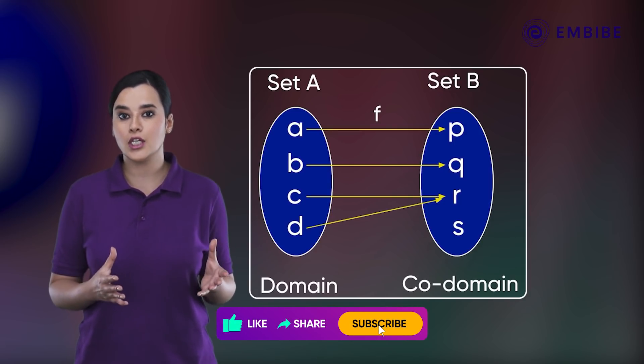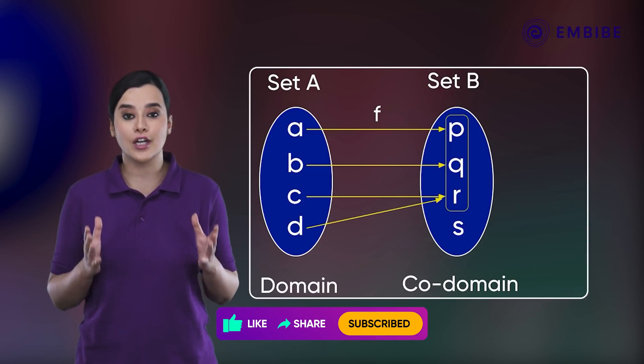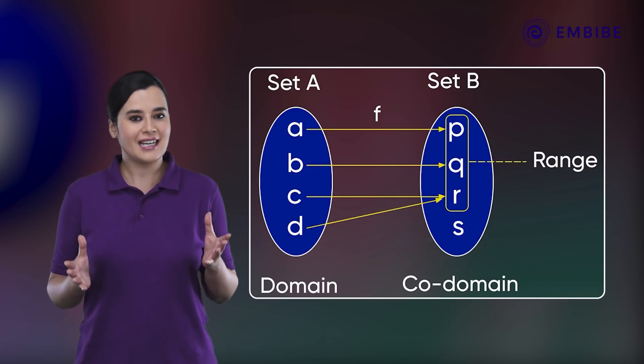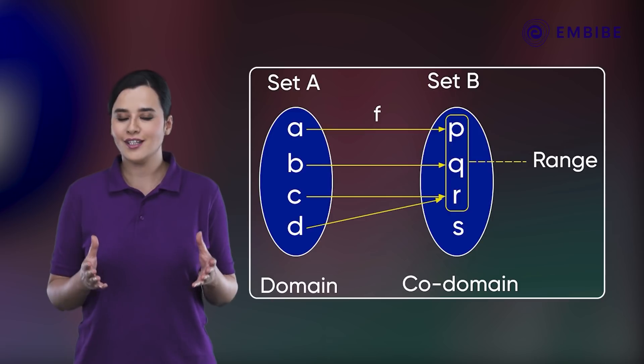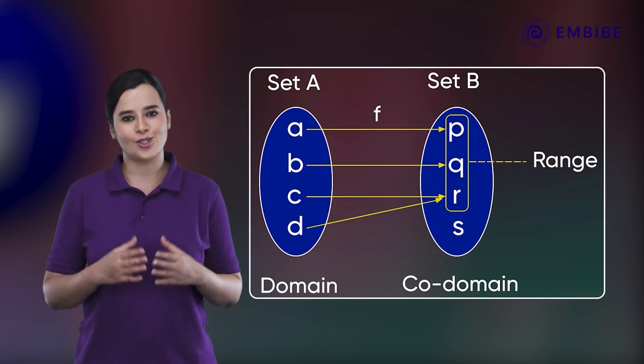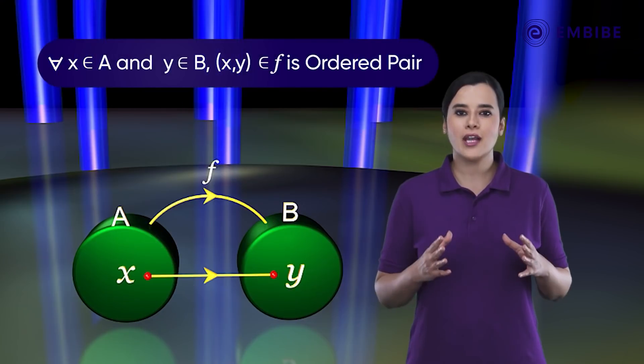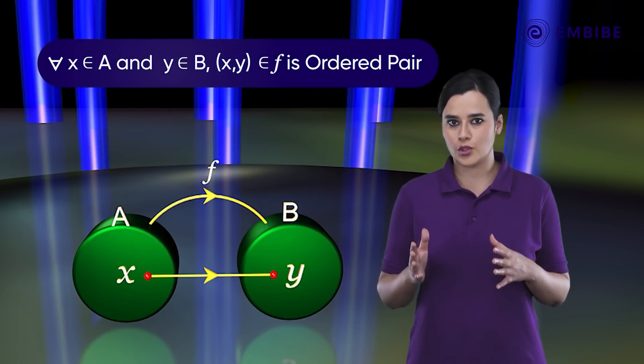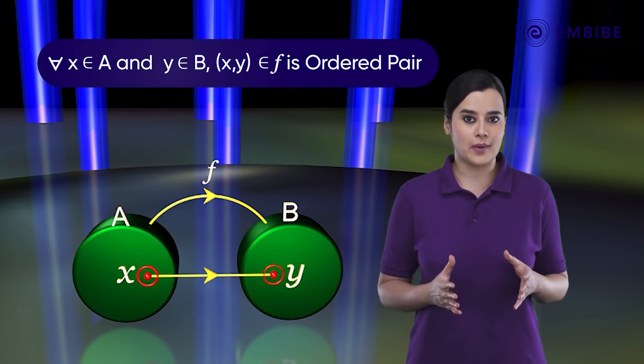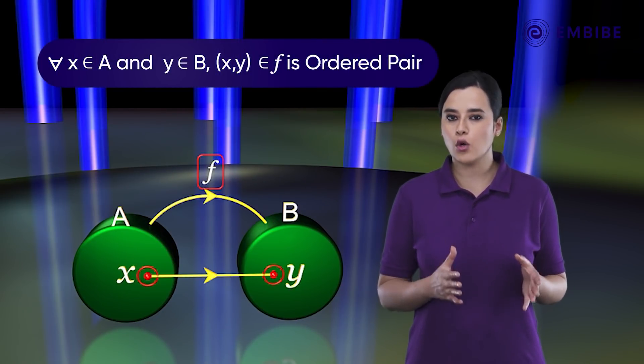Let's learn more about domain, co-domain, and range of a function. For every element x belongs to A, there is an ordered pair (x, y) belongs to f, where y belongs to B.